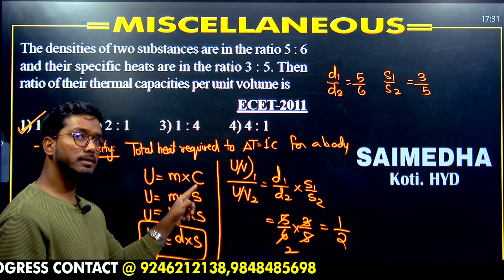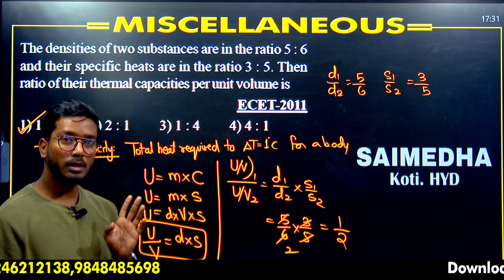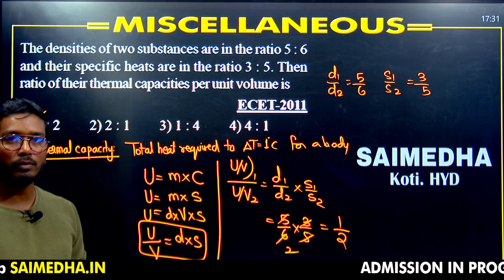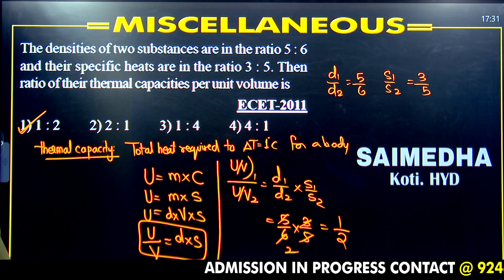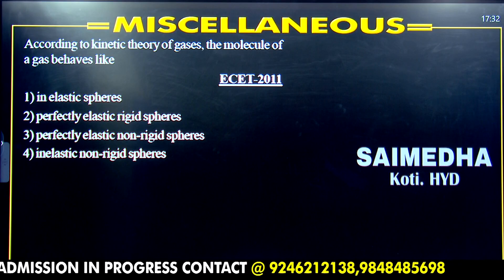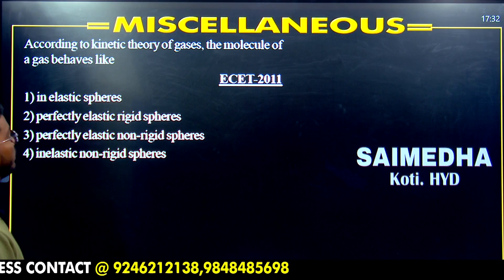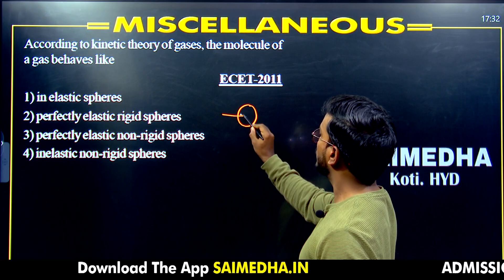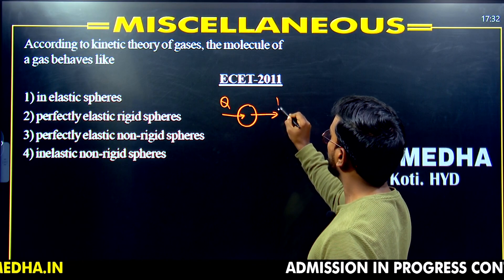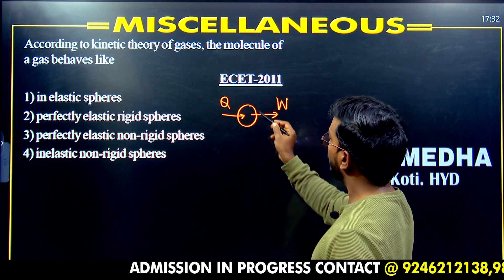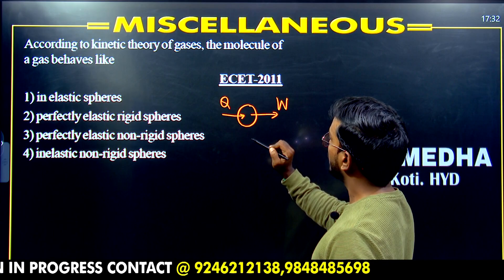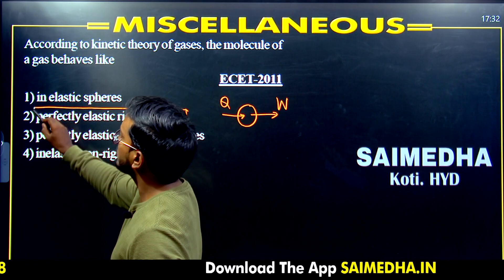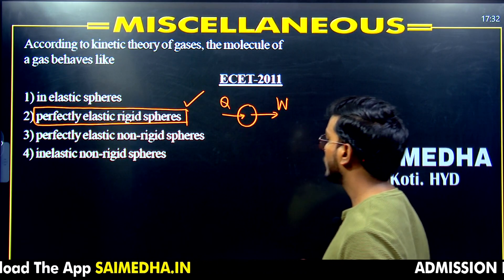Specific heat is the amount of heat energy required to increase the temperature by 1 degree Celsius for unit mass. If total mass is given, it becomes thermal capacity. Moving on: according to kinetic theory of gases, molecules absorb heat energy and convert it into work energy. For ideal gas molecules, there is no absorption of energy when molecules are perfectly elastic rigid spheres — that is the correct answer.